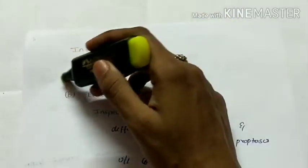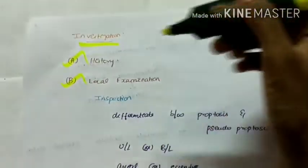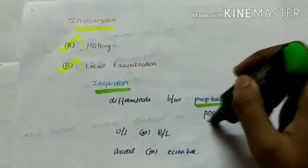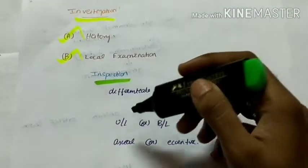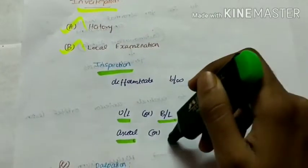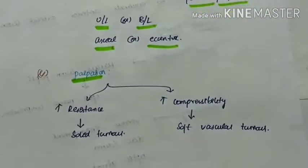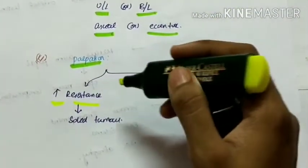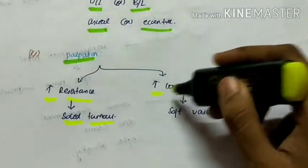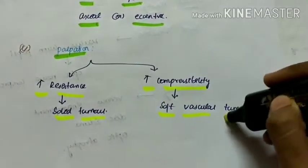Investigation of proptosis begins with history taking — a detailed history should be taken — followed by local examination. Local examination includes inspection to differentiate between proptosis and pseudoproptosis, to see if it is unilateral or bilateral, and to determine if it is axial or eccentric proptosis. On palpation, increased resistance indicates a solid tumour, while increased compressibility indicates a soft vascular tumour.